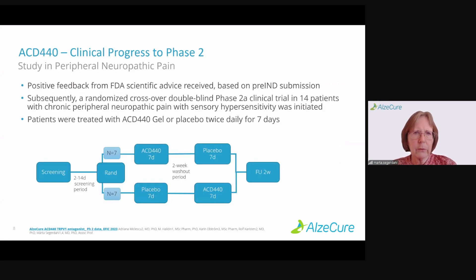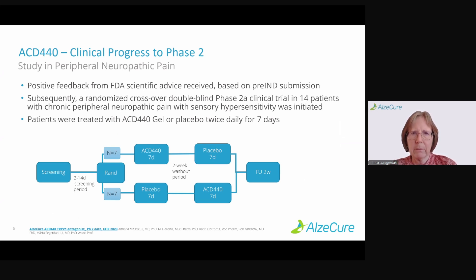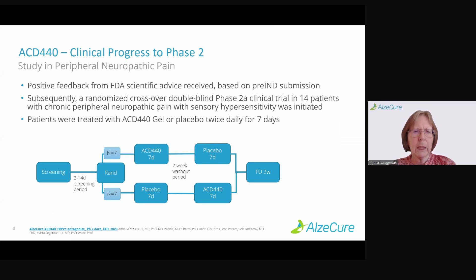We then continued to a phase 2 trial in patients with peripheral neuropathic pain with hypersensitivity — that is, patients with increased sensitivity to skin stimulation. We had positive feedback from the FDA based on our pre-IND submission supporting us conducting this trial. We conducted a randomized crossover placebo-blind phase 2 clinical trial in 14 patients — seven received ACD440 first then switched to placebo for one week, and seven did it the other way around.